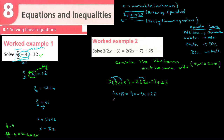Now collect the unknown terms on one side: 6x and 4x should be on the same side. When 4x moves to the left it becomes −4x, giving 6x − 4x. The 15 moves to the right and becomes −15, so the right side is −14 + 25 − 15. Therefore 2x equals −14 + 25 − 15, which equals −4.